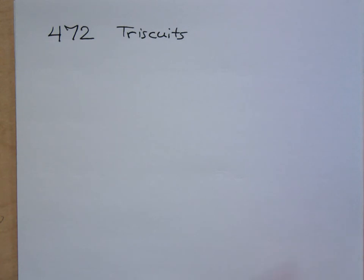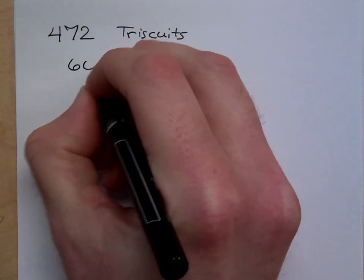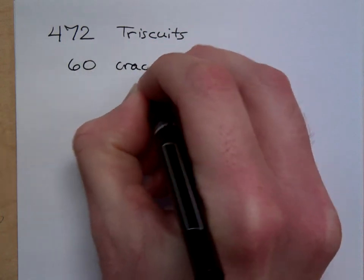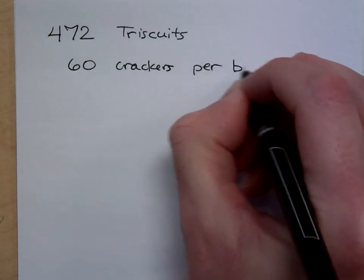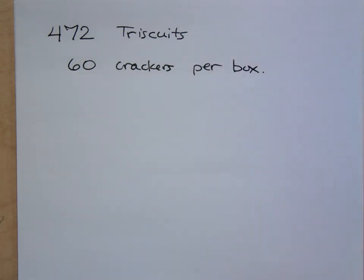So she needed 472 Triscuits. Now, here's the thing. We had to look at the boxes and figure out how many boxes we need, right? Because you've got to pay attention. You don't just buy a box and hope it works. When you're going to somebody's house the night before to put these things together, you need to make sure you have enough. So I looked at it, and there were 60 of these crackers per box. The question that I'm posing to you is, how many boxes do I need? How was I able to figure this out?